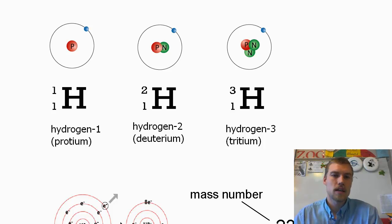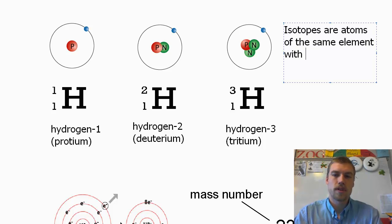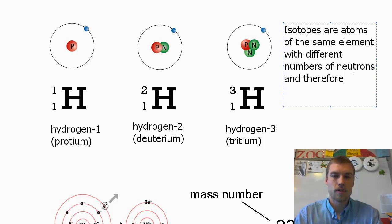First we're going to look at isotopes. Isotopes are atoms of the same element with different numbers of neutrons and therefore different masses.